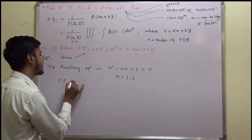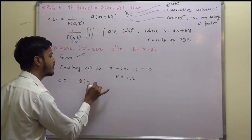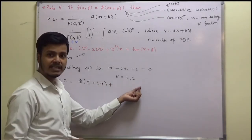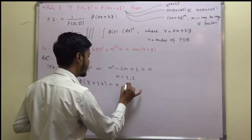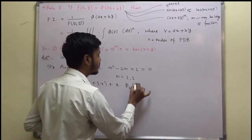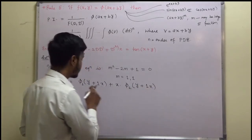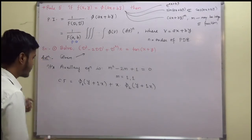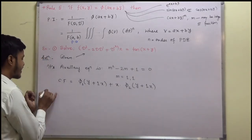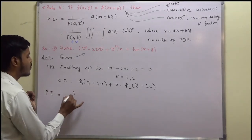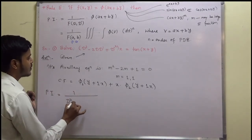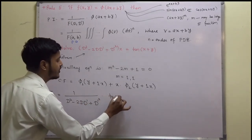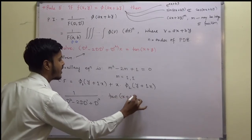So we can write the complementary function as CF = phi_1(y + x) + x · phi_2(y + x), where phi_1 and phi_2 are arbitrary functions. After finding the CF, we just have to find the particular integral PI.